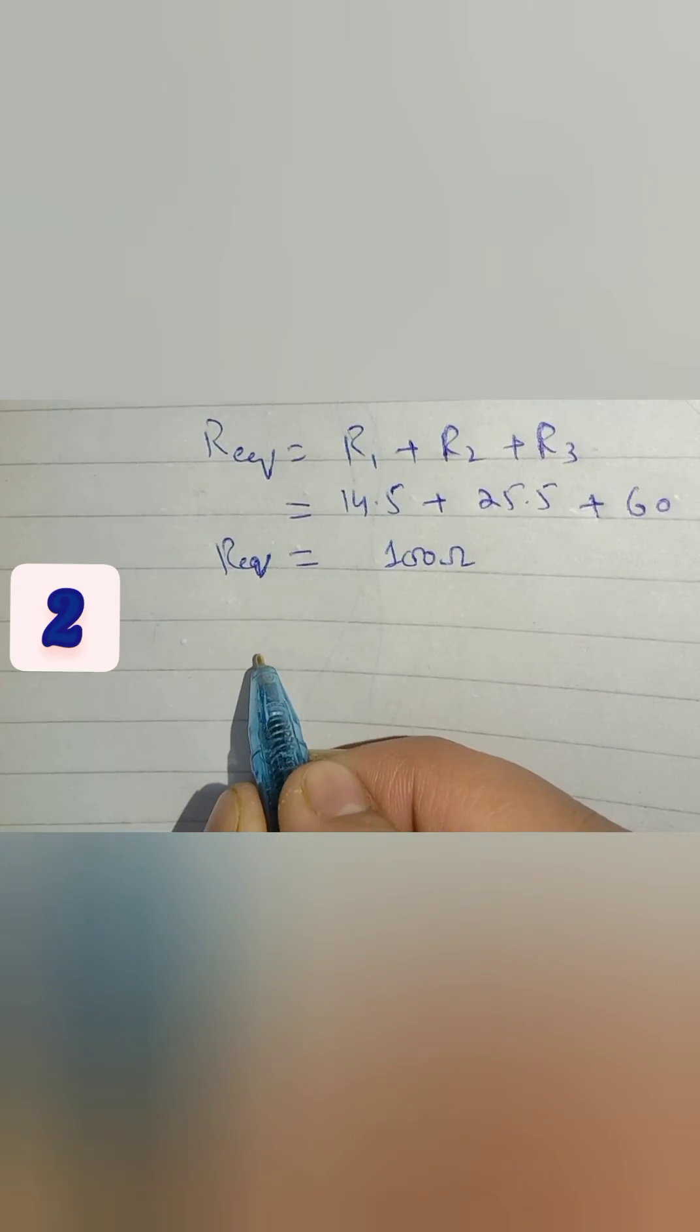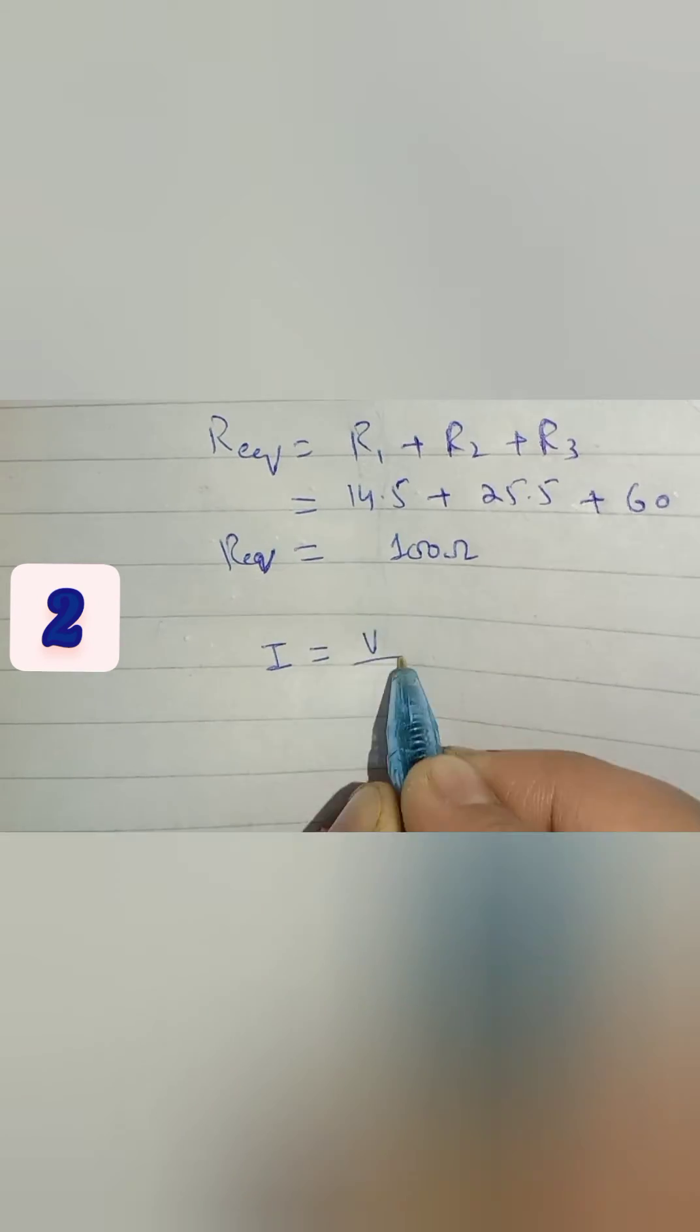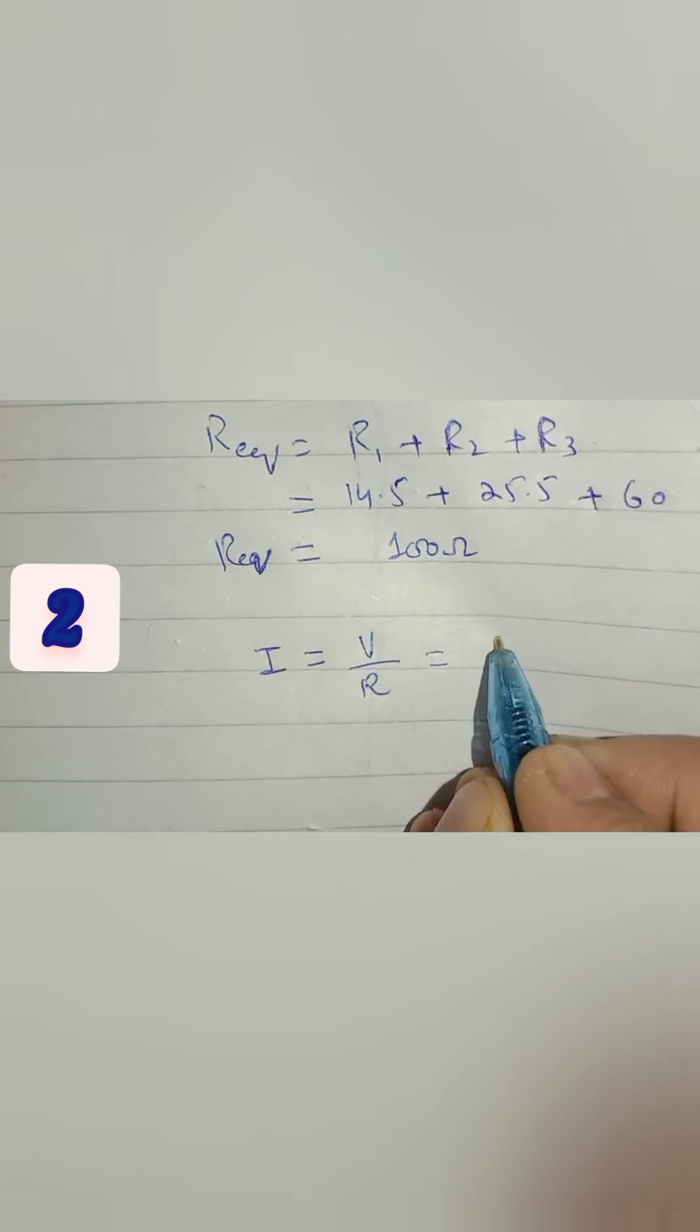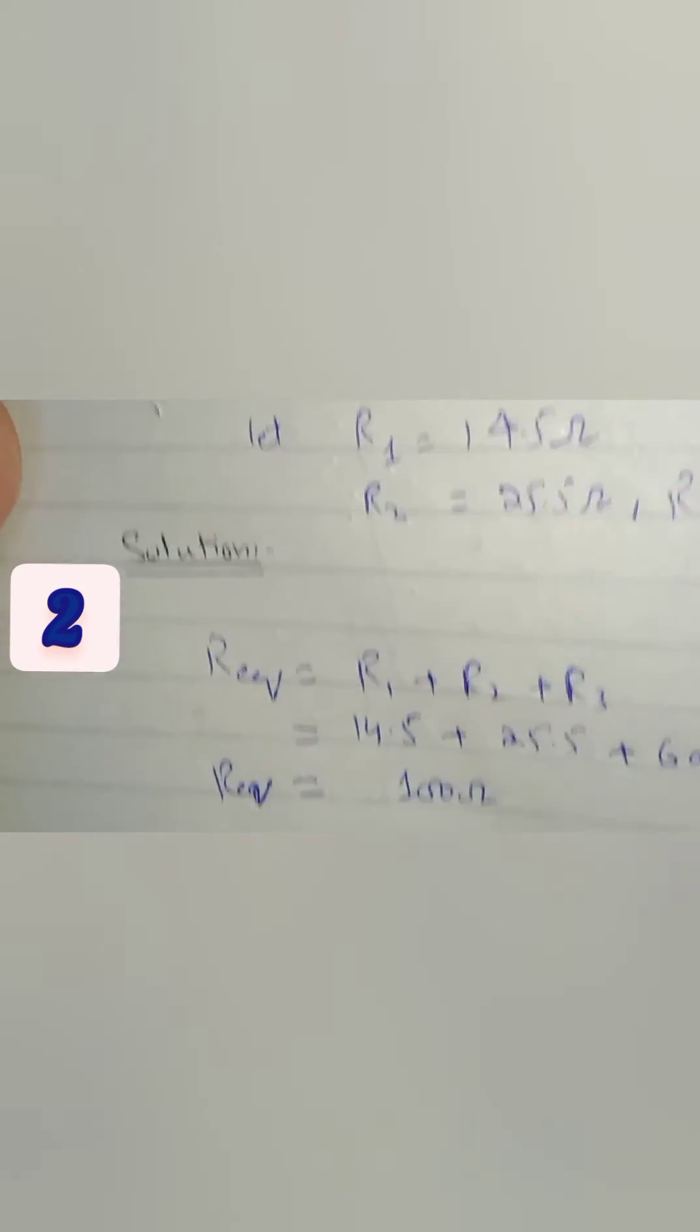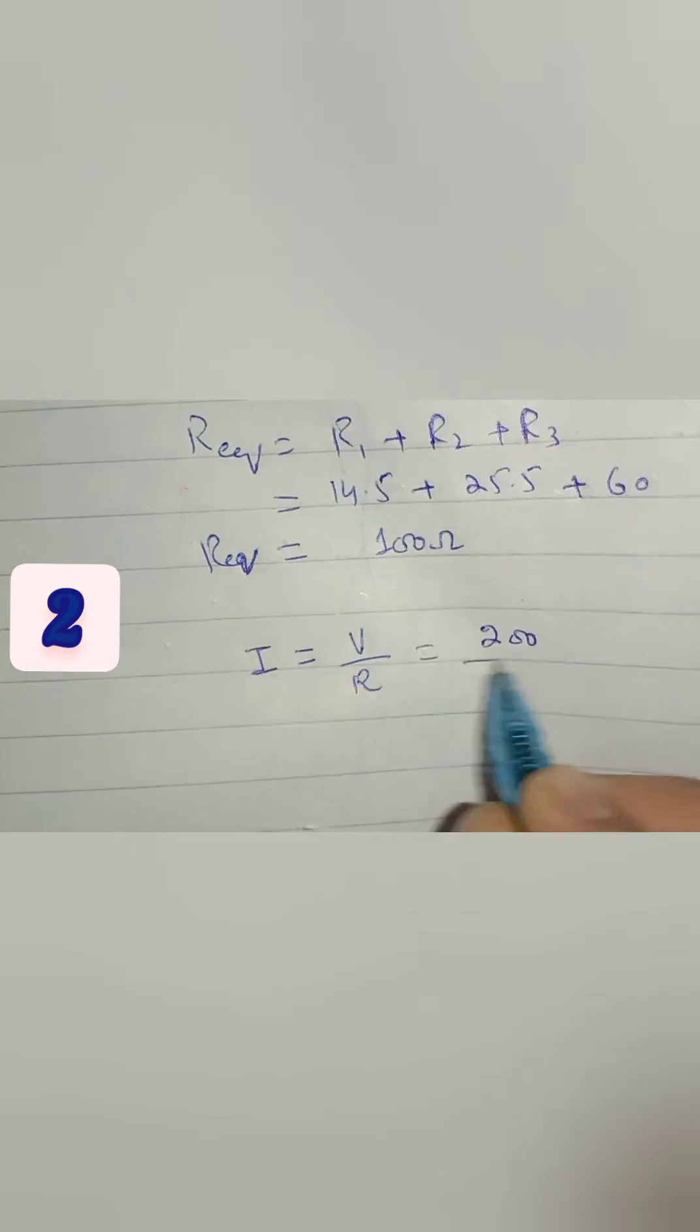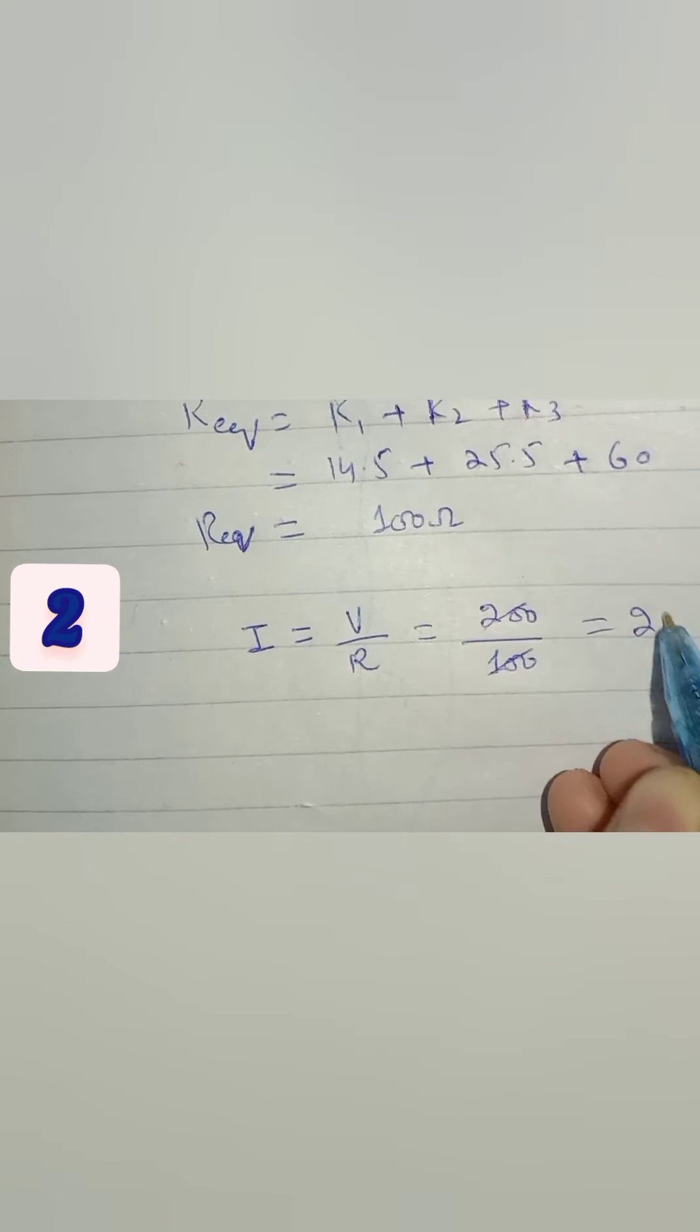Now I equals V over R. Putting the values, V is 200 volts and R is 100 ohms, which we calculated recently. So our current comes out to 2 amperes. As the circuit is series, current will be the same through all the resistors.